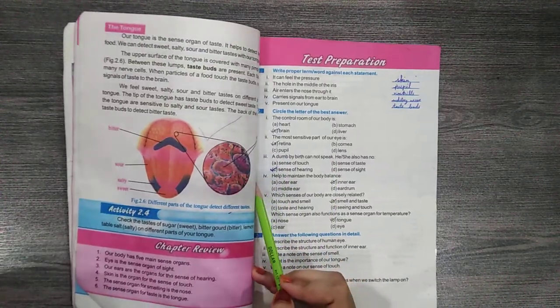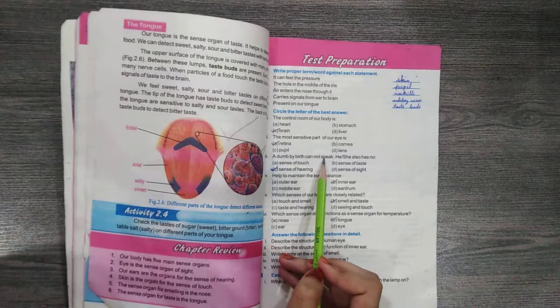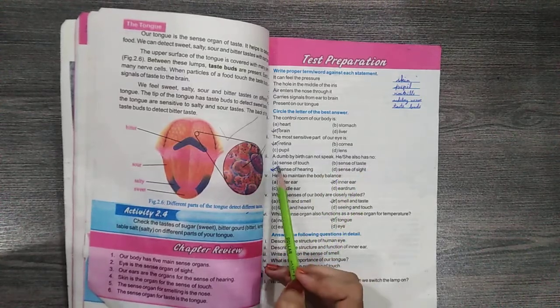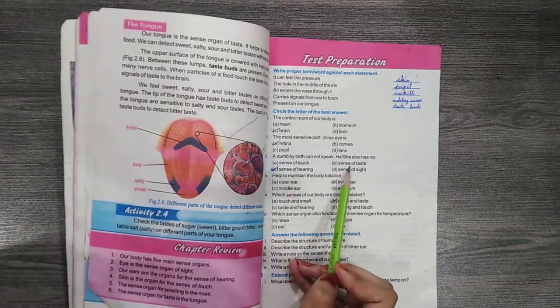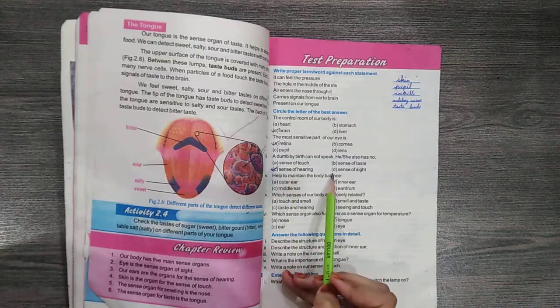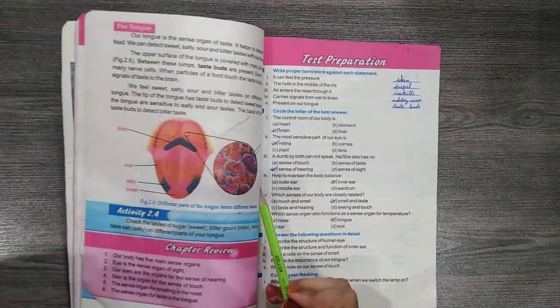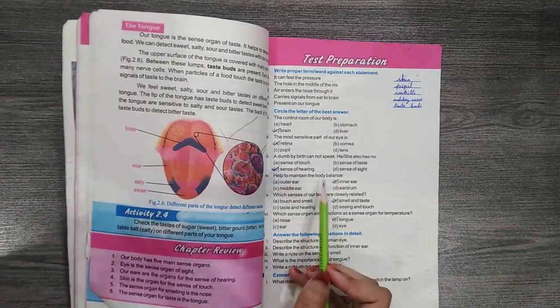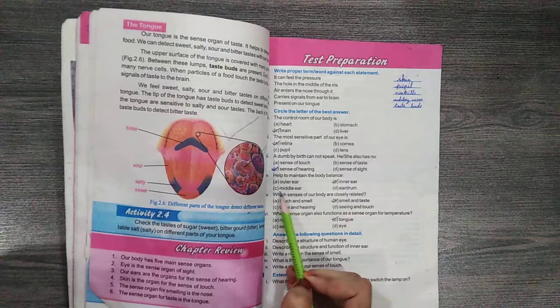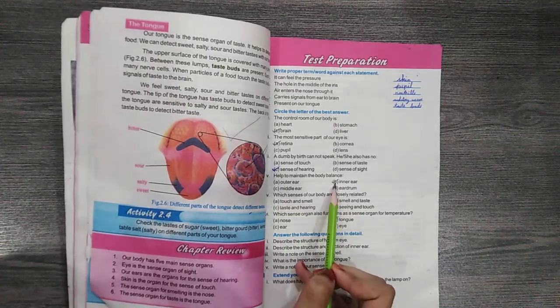Question number 3: A dumb person cannot speak, she also has no A. Sense of touch, B. Sense of taste, C. Sense of hearing, D. Sense of sight - the answer is C. Question number 4: Helps to maintain body balance A. Outer ear, B. Inner ear, C. Middle ear, D. Eardrum - the answer is B. Inner ear.